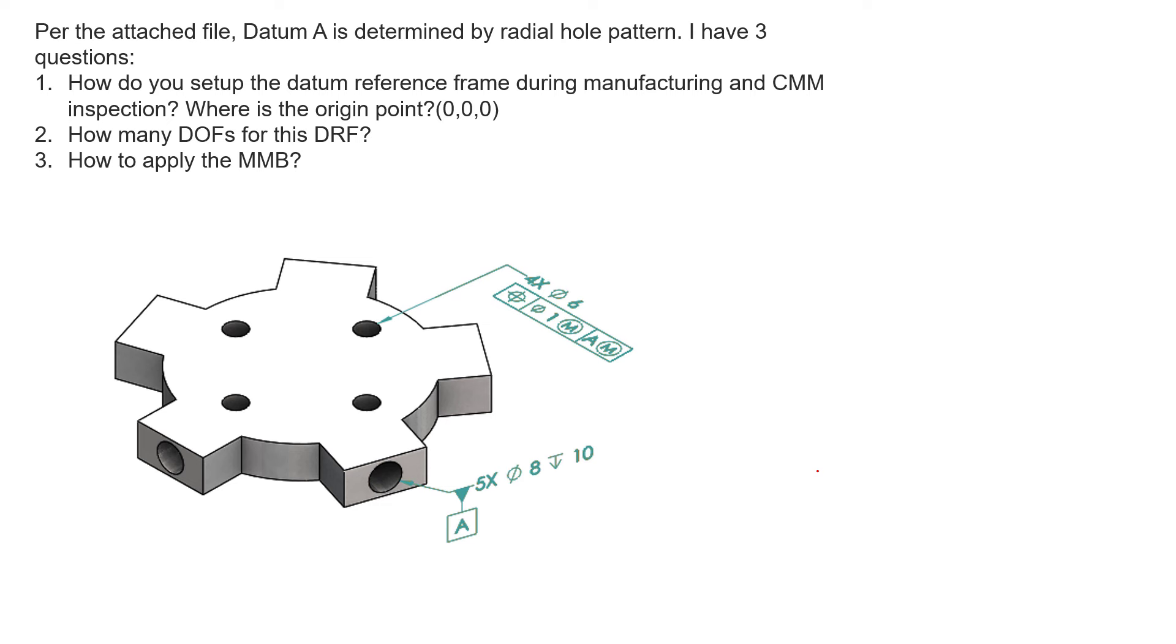Thanks for your question, Alan. Let's dig into it. Here's the attached file. We can see a pattern of four holes with a diameter of six millimeters and a pattern of five holes with a diameter of eight millimeters radially around this part. The pattern of five holes is being identified as datum feature A. That's all five holes simultaneously acting as a single datum feature that locks in our degrees of freedom. We can see here in this feature control frame we're referencing that datum feature at the MMB condition.